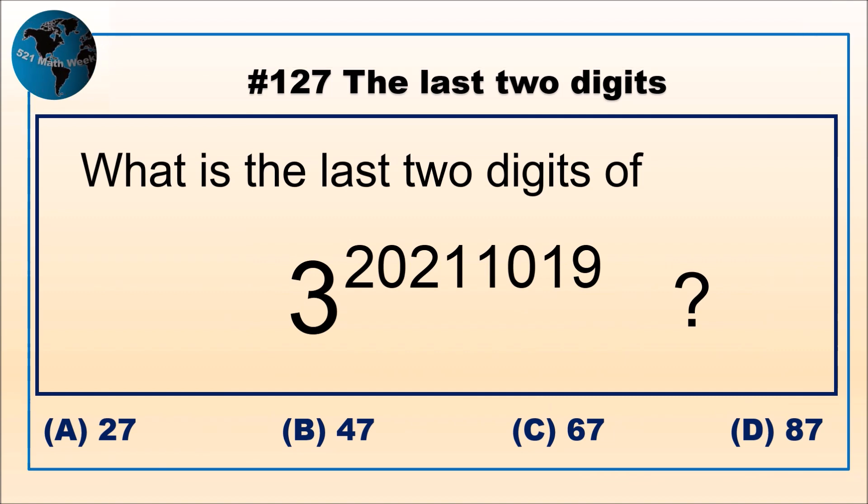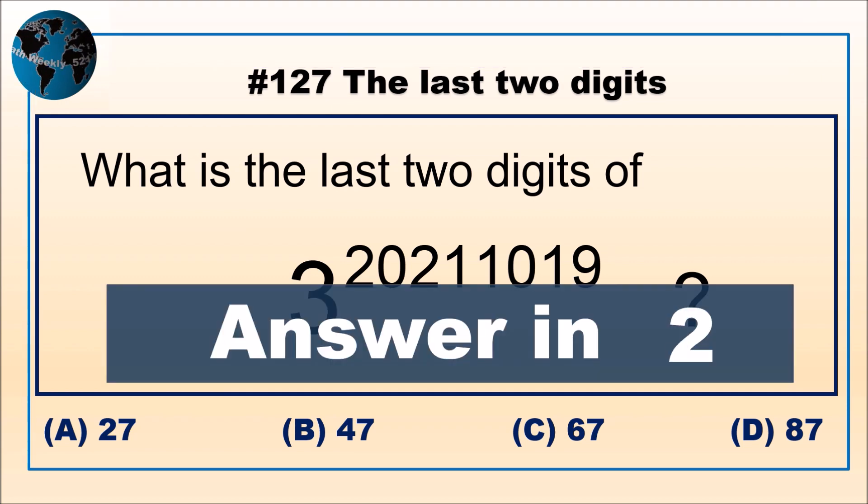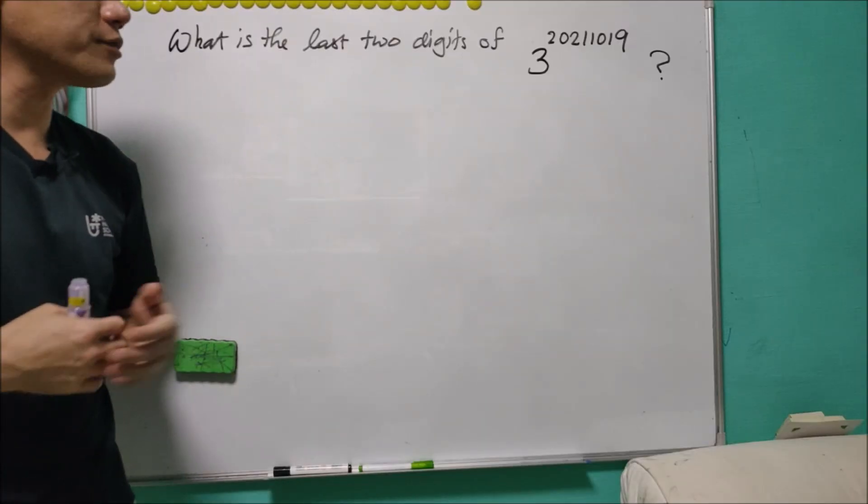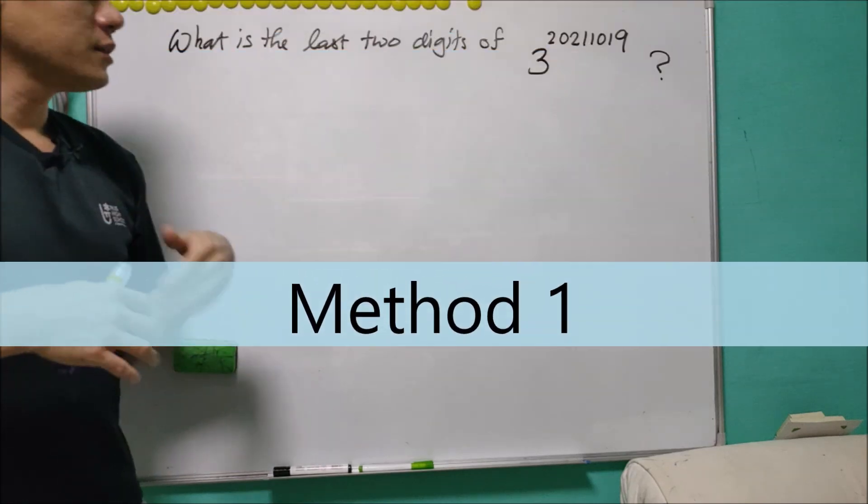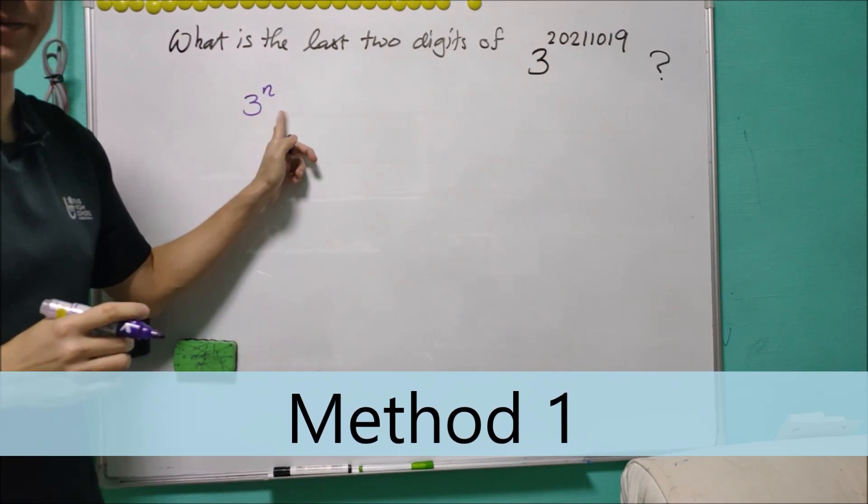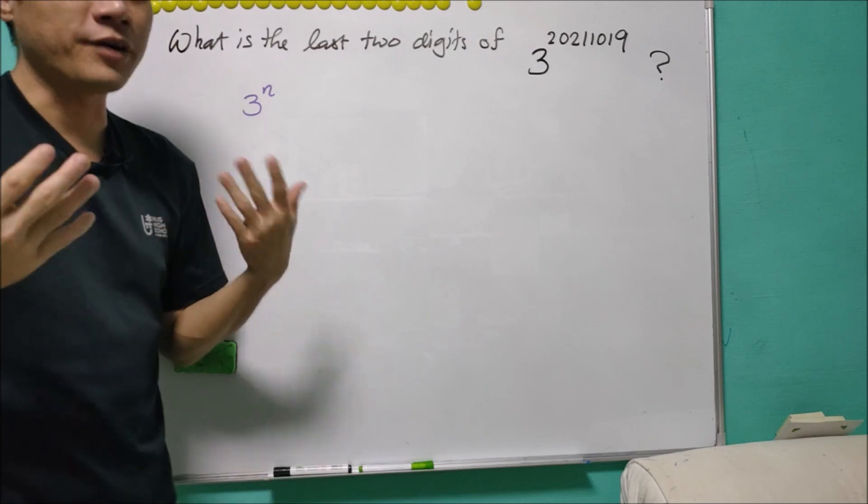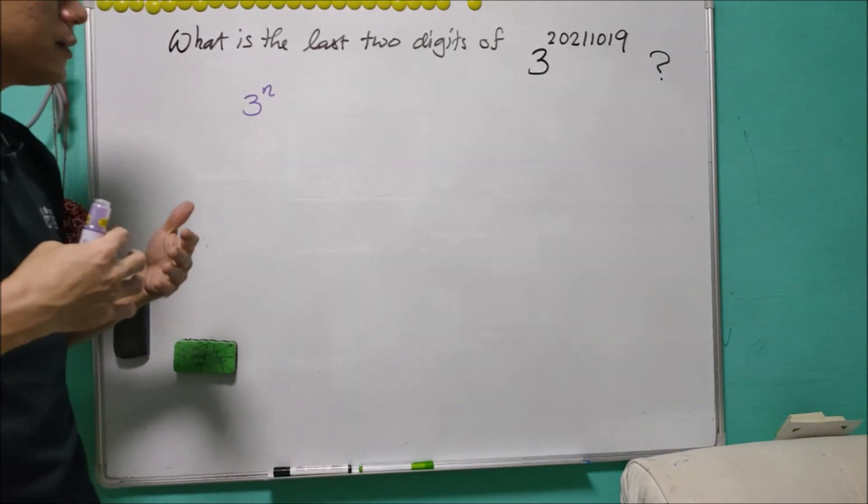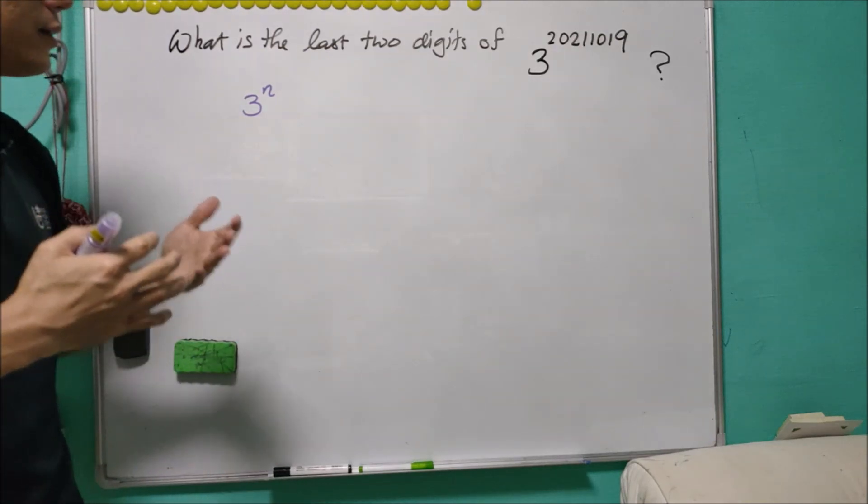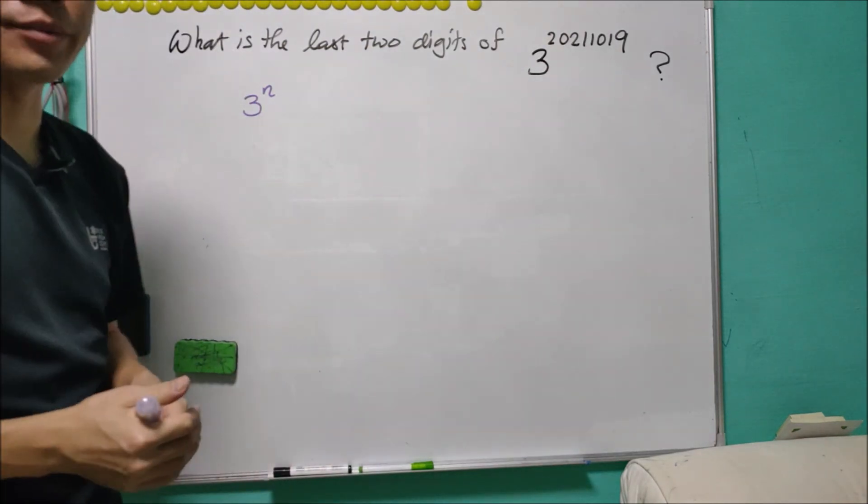Pause the video now if you wish to solve it. Keep watching the video once ready. I'm going to provide you two different ways to solve this question. The first way is listing out last two digits for 3 to the power of n with normal number of n. Because last two digits can range from 00 to 99, sooner or later we'll get a pattern, a repeated pattern. So from there we can get what happened to this.